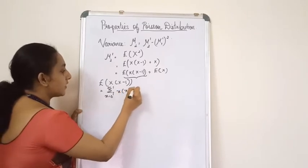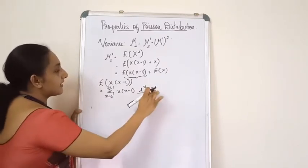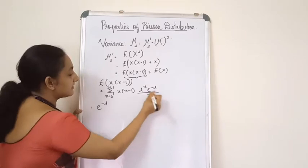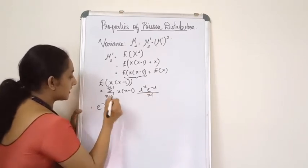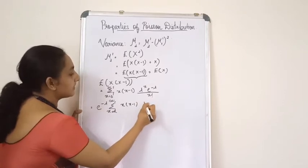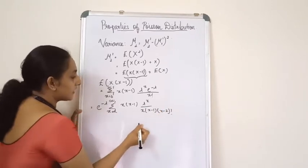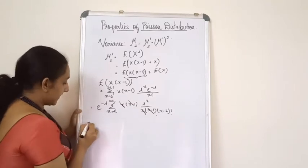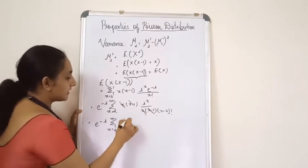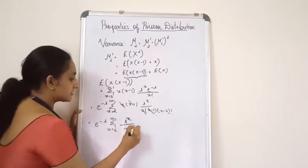E[X(X−1)] = Σ (x=0 to ∞) x(x−1) · λ^x · e^(−λ) / x!. Taking e^(−λ) outside and rewriting x! = x(x−1)(x−2)!, the x(x−1) terms cancel. We get e^(−λ) · Σ (x=2 to ∞) λ^x / (x−2)!.